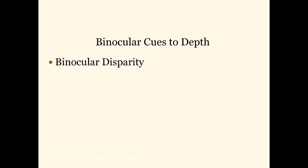Now let's take a look at how binocular cues — in other words, cues that rely on the presence of two eyes — result in the ability to create 3D movies and other 3D images. It relies on this concept of binocular disparity: the fact that the left and the right eyes have a slightly different view of the world, creating a disparity or different image.